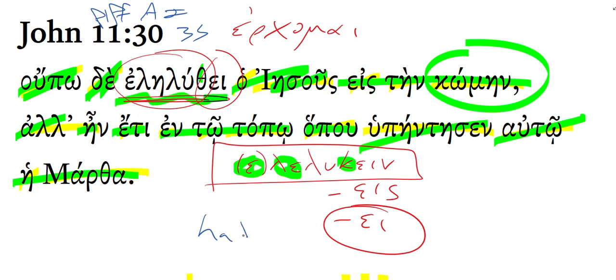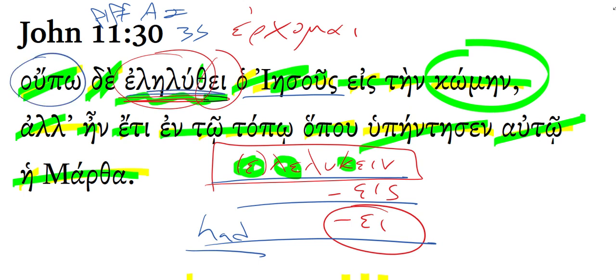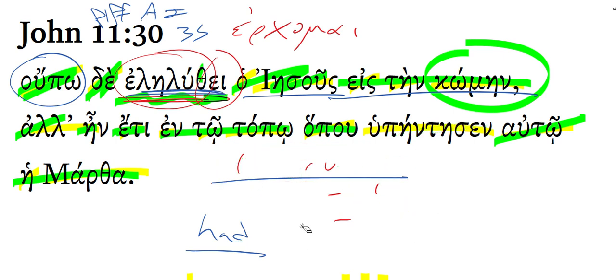Notice the pluperfect is normally translated with had. I had loosed, you had loosed, he had loosed. Here, Jesus not yet had come. Now Jesus not yet had come into the village. Let's also look at this verb down here, hupainteson.